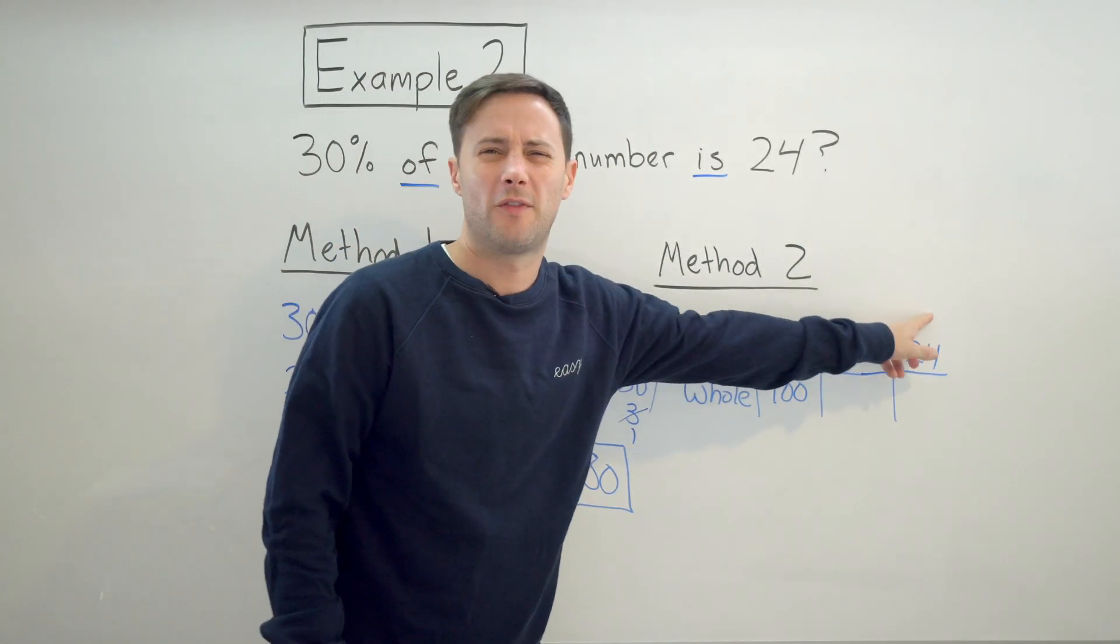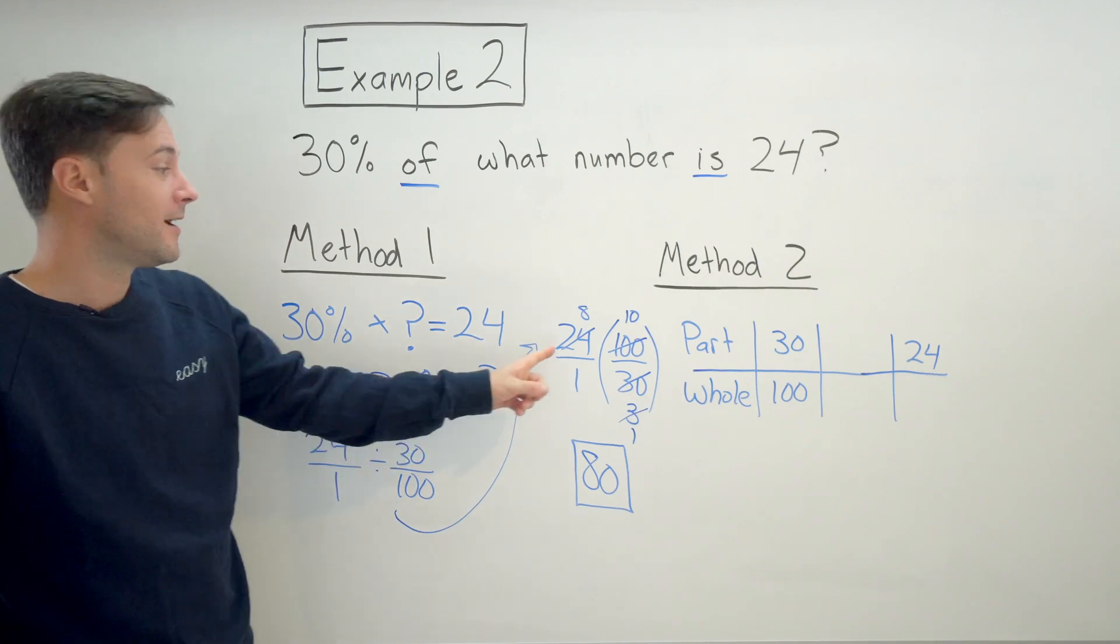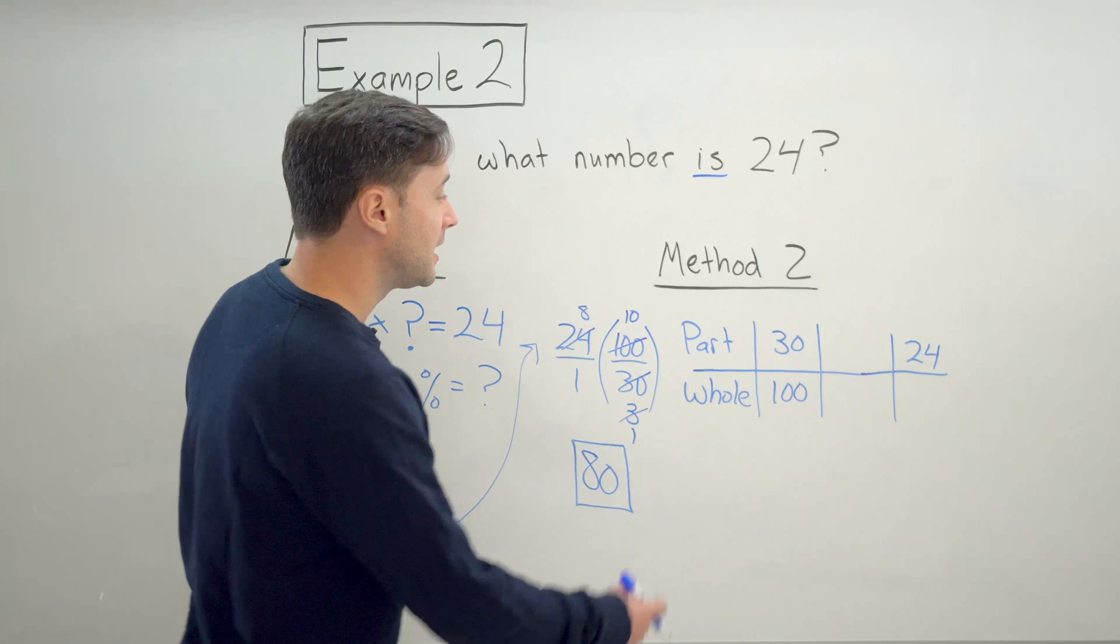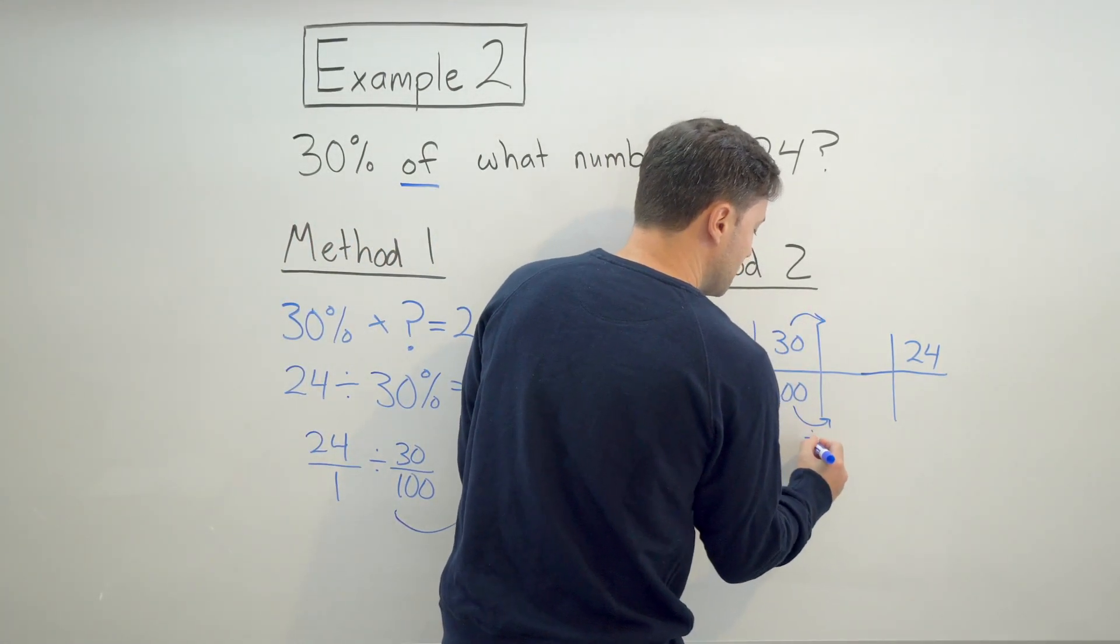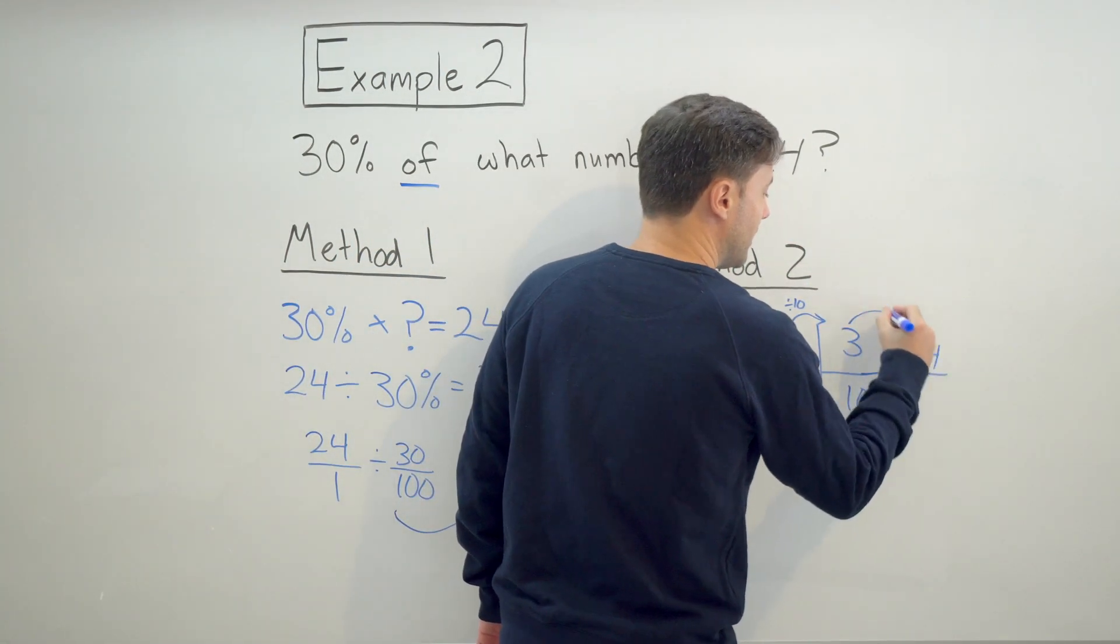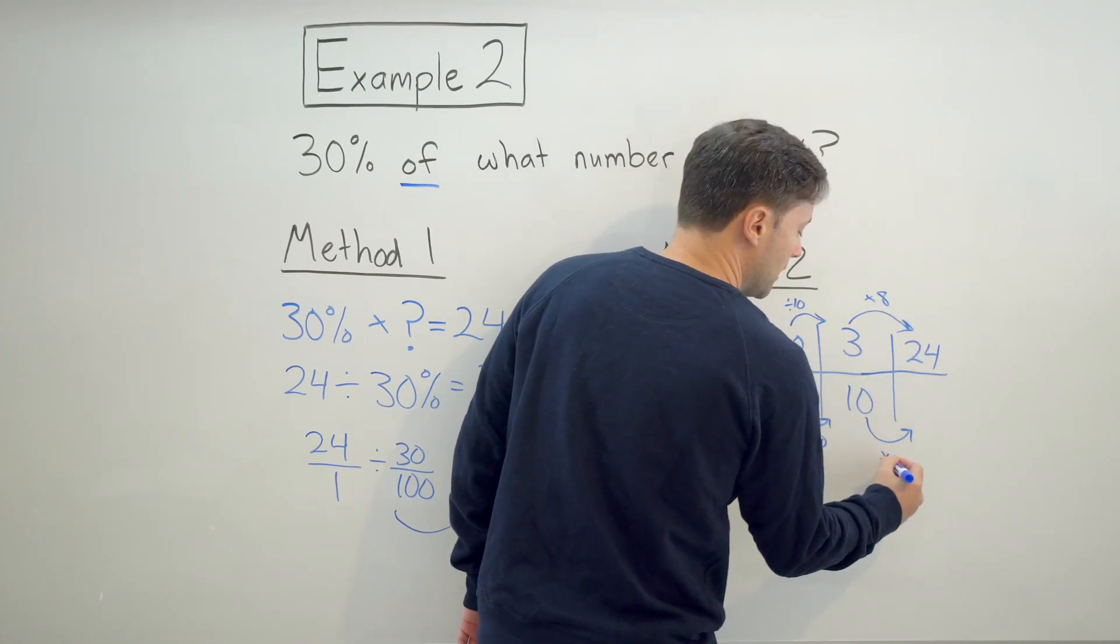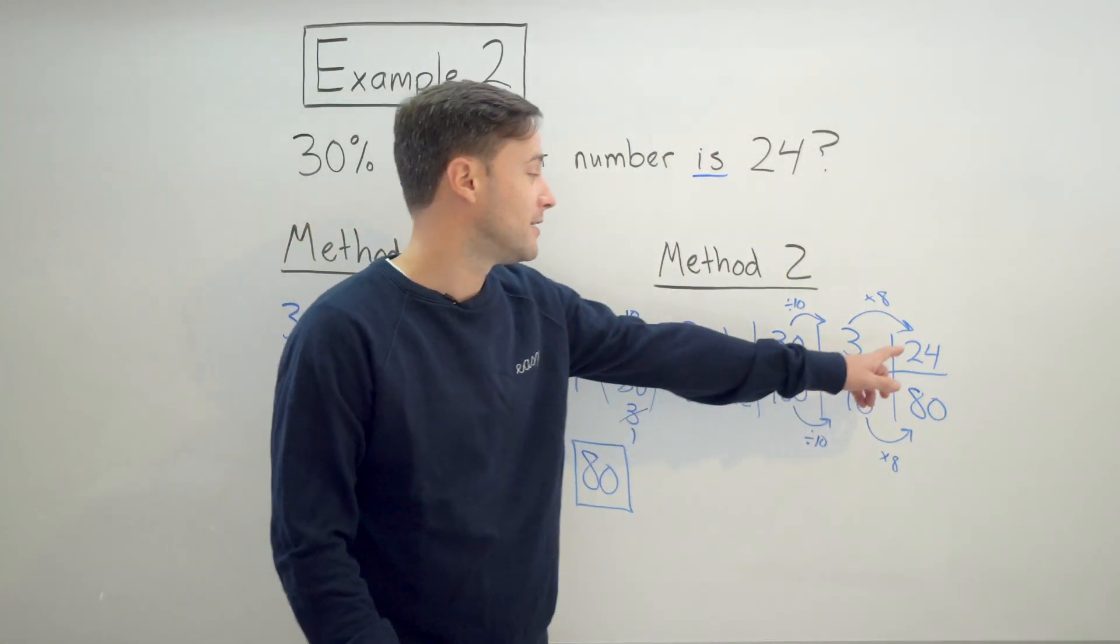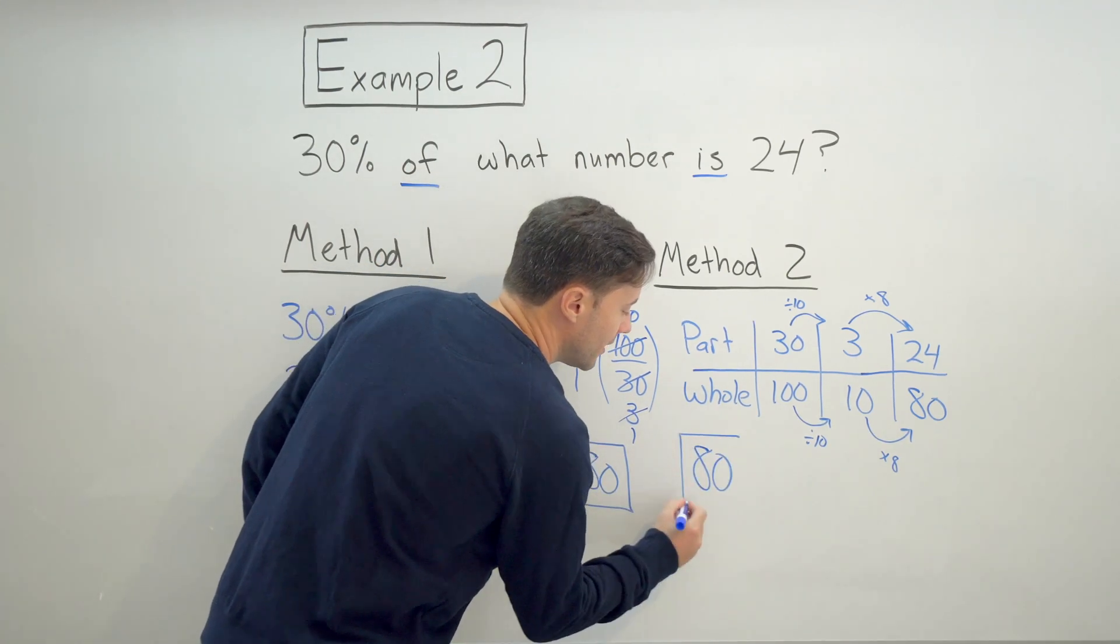Unfortunately, to go from 30 to 24 is not easy, right? But just like what I did here, I simplified. I can do the exact same thing with my percent first. So let's do that. I'm going to divide both by 10 and simplify. So now 3 to 24 is very easy. That's just multiplying by 8. So I got to do the same to make sure it's equivalent. And wouldn't you know it, when 24 is the part, we got the exact same answer of 80.